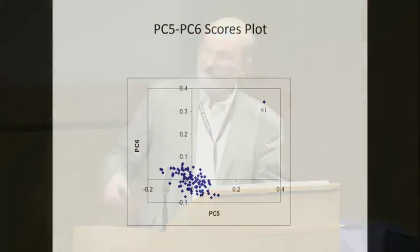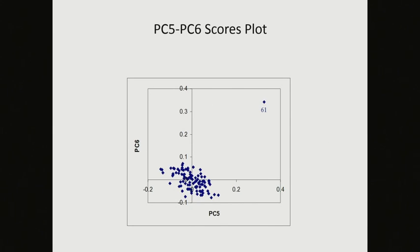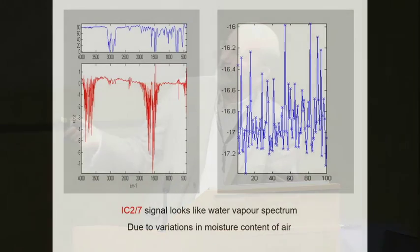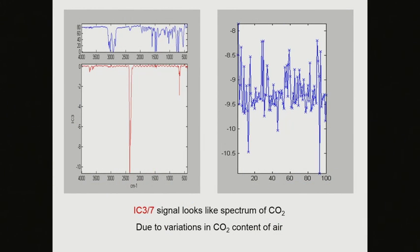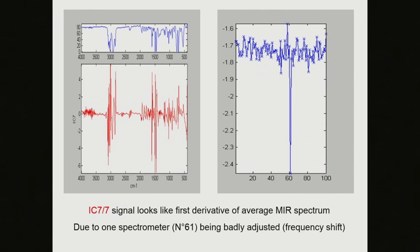This mixing occurs because one spectrometer is badly calibrated and there are changes in the thickness of the polystyrene film. When you plot PC5 against PC6, you can see spectrometer 61 was badly adjusted — the frequency difference is less than one centimetre-minus-one, so PCA can detect something below spectral resolution. But with ICA, you get water vapour, CO2, polystyrene thickness change, and the first-derivative effect from spectrometer 61 all separated out — making interpretation much easier.